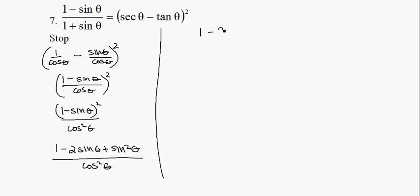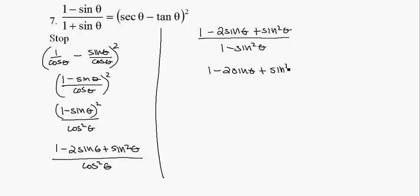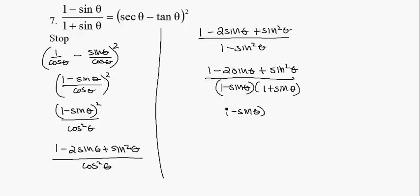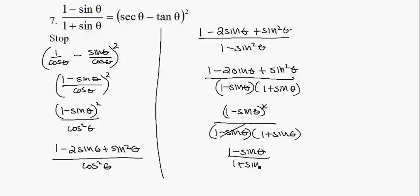So rewriting: 1 minus 2 sine theta plus sine squared theta, all over 1 minus sine squared theta. I'm going to factor the denominator: (1 minus sine theta)(1 plus sine theta). I have (1 minus sine) and (1 plus sine) in the denominator. It wasn't smart to multiply out the numerator, so I'm going to change it back to (1 minus sine theta) squared, all over (1 minus sine theta)(1 plus sine theta). One of the (1 minus sine theta) factors cancels, leaving (1 minus sine theta) over (1 plus sine theta), and we're all set.